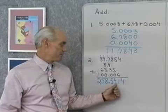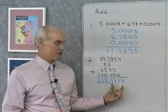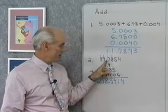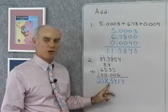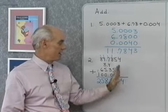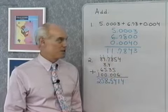So, 258.5414, tenths, hundredths, thousandths, ten-thousandths for the answer to that. But, you can see I've aligned my decimal points here. The decimal point in the answer goes directly below the decimal points in the problems. And then, I've added the numbers that have the same place value, or added the digits with the same place value.